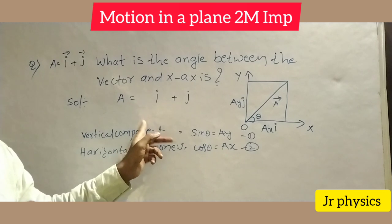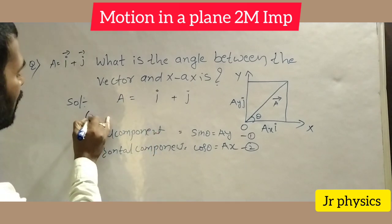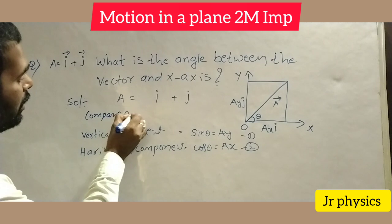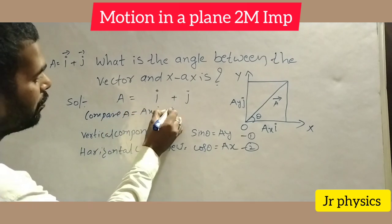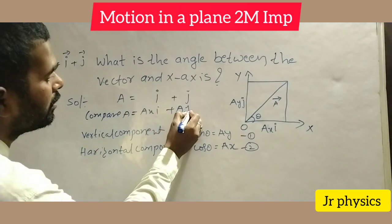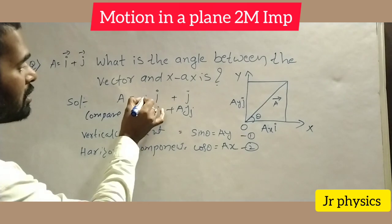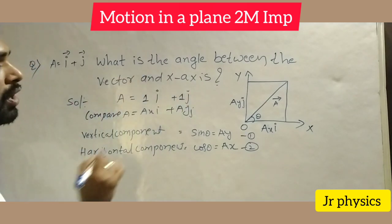This is the given vector. This given vector we have to compare with A equals ax i plus ay j. See, ax component here is 1, ay component here is also 1.